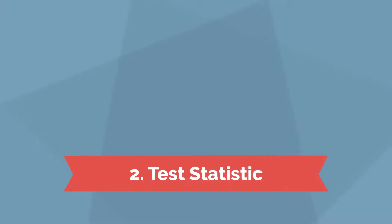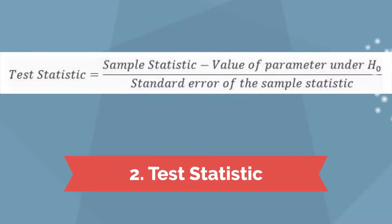The next step in hypothesis testing is identifying the appropriate test statistic. The focal point of our statistical decision is the value of the test statistic. In all the cases we will examine in this course, the test statistic has the following form: test statistic equals the sample statistic minus the value of the parameter under the null hypothesis, divided by the standard error of the sample statistic.